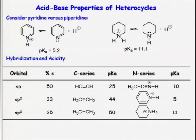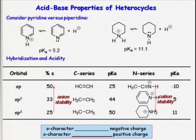Notice the large degree in difference in acidity, and remember that the lower the pKa, the stronger the acid. So we know that the conjugate acid of pyridine is the stronger acid of the two. If we look at this table that relates hybridization and acidity, we can explain the difference in pKa between these two conjugate acids. For the carbon series, as the percent S character in an orbital increases, so does the anion stability.